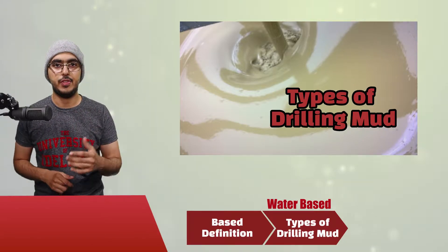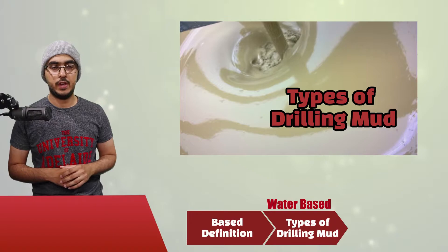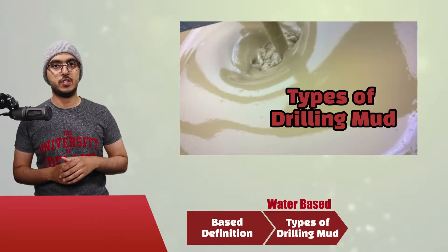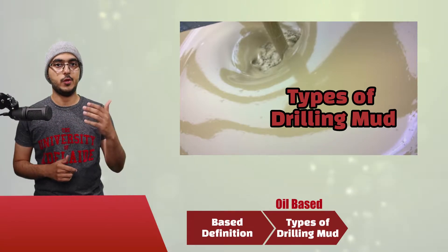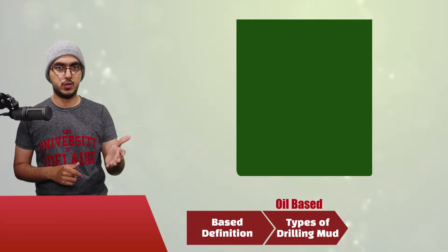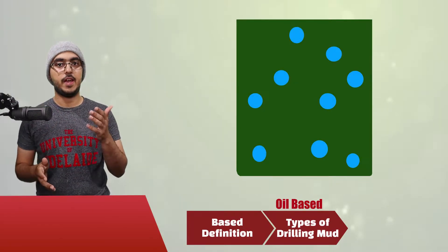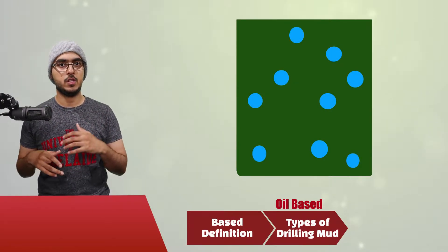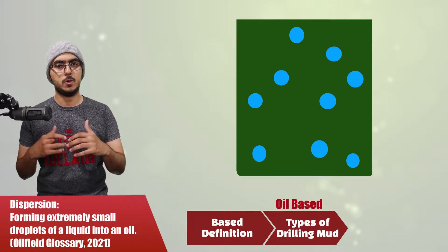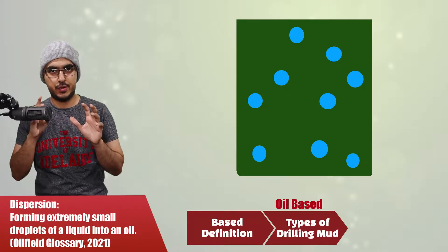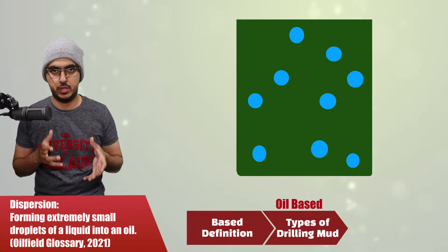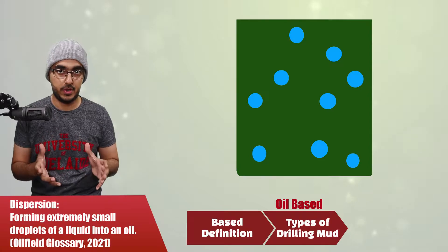The second type of drilling muds is oil-based mud, where you have oil as a continuous phase and water as a dispersed phase. Dispersed phase means that it's kind of spread around in the fluid — in the mud itself.